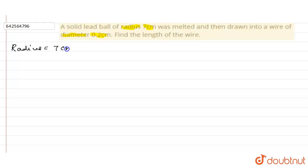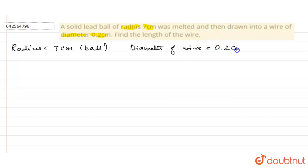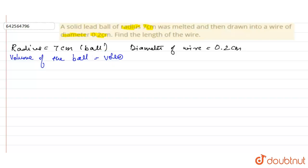The radius of the ball is 7 centimeters, and the diameter of the wire is 0.2 centimeters. We know that the volume of the ball is equal to the volume of the wire, because the volume of an object doesn't change even if the shape changes.